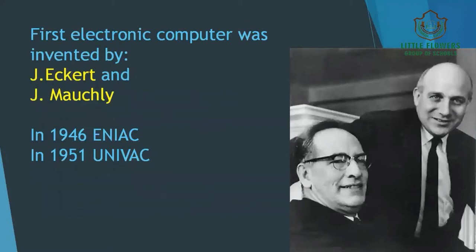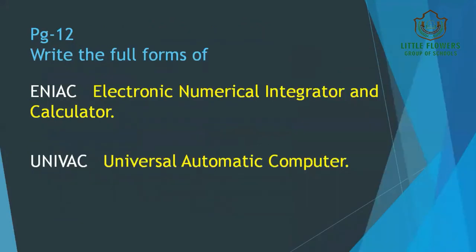The first electronic computer was invented by J. Eckert and J. Mauchly. In 1946, ENIAC was invented, and in 1951, UNIVAC was invented. The full form of ENIAC is Electronic Numerical Integrator and Calculator, whereas UNIVAC means Universal Automatic Computer.